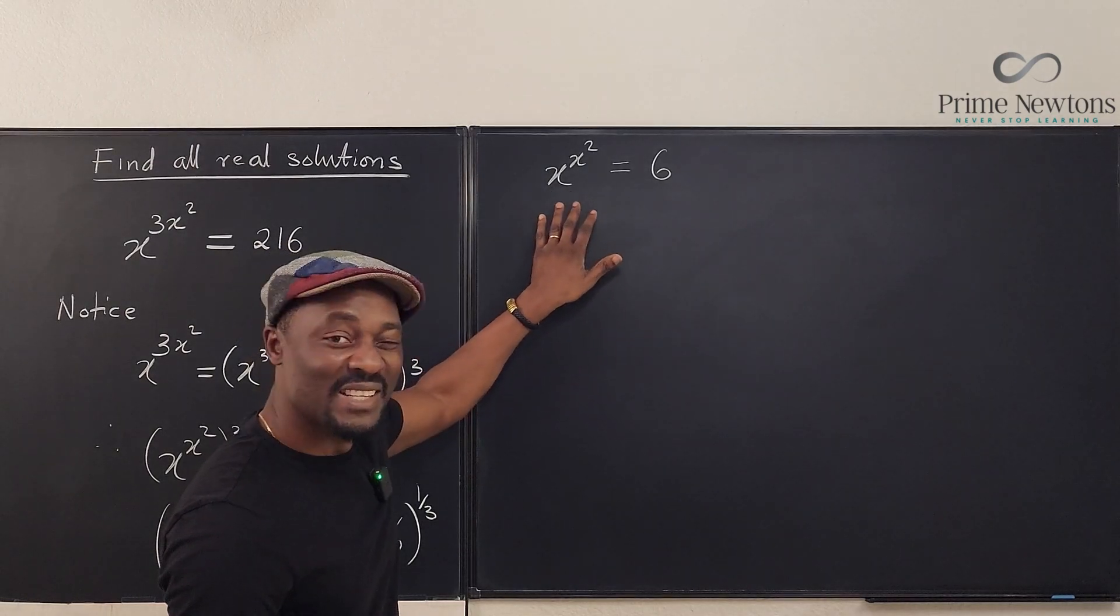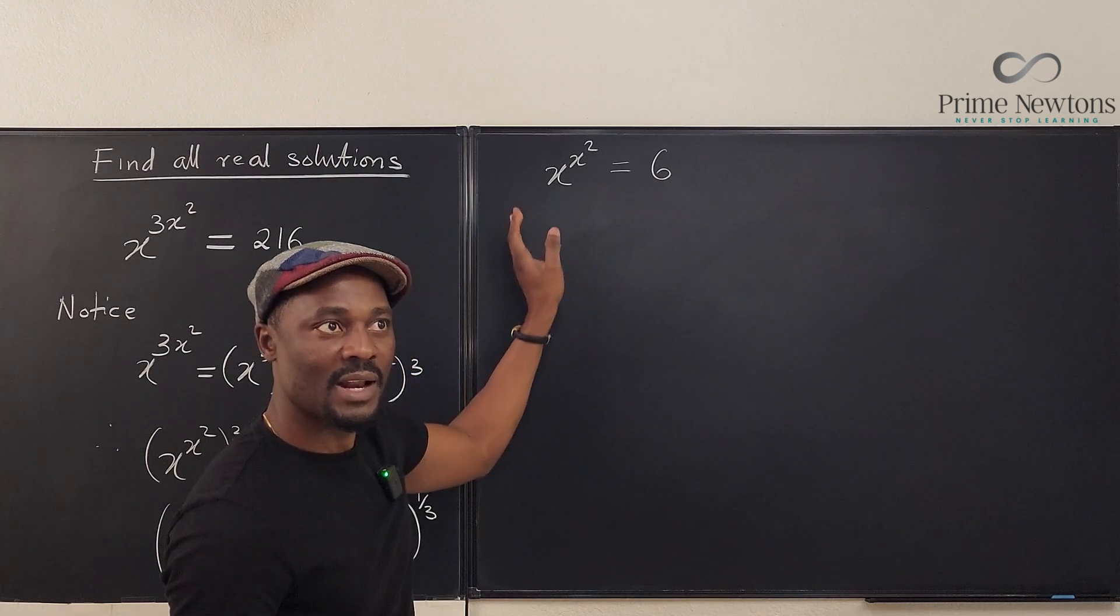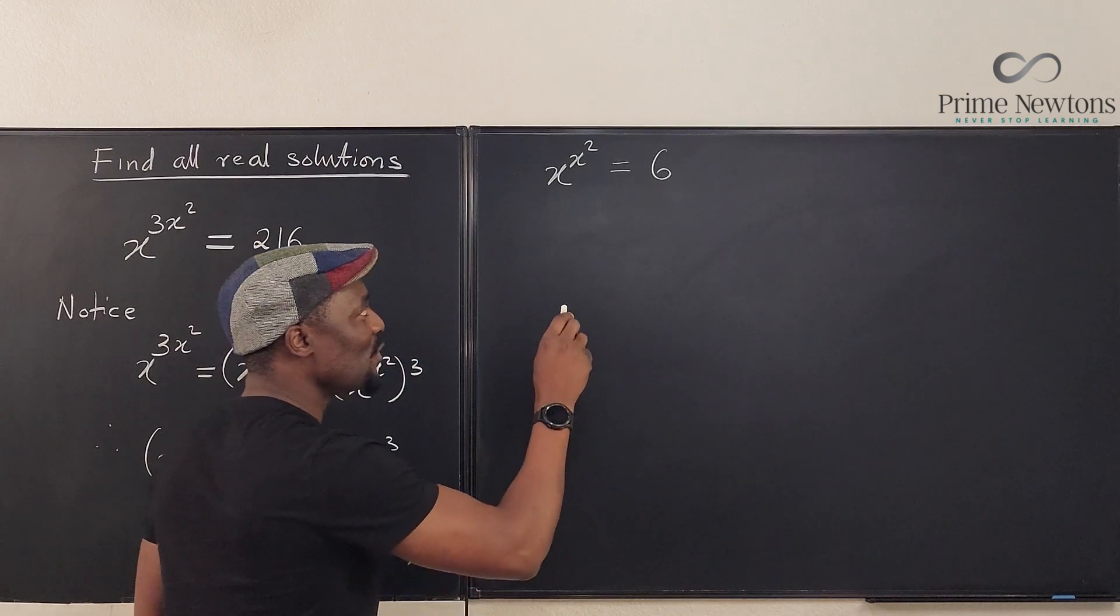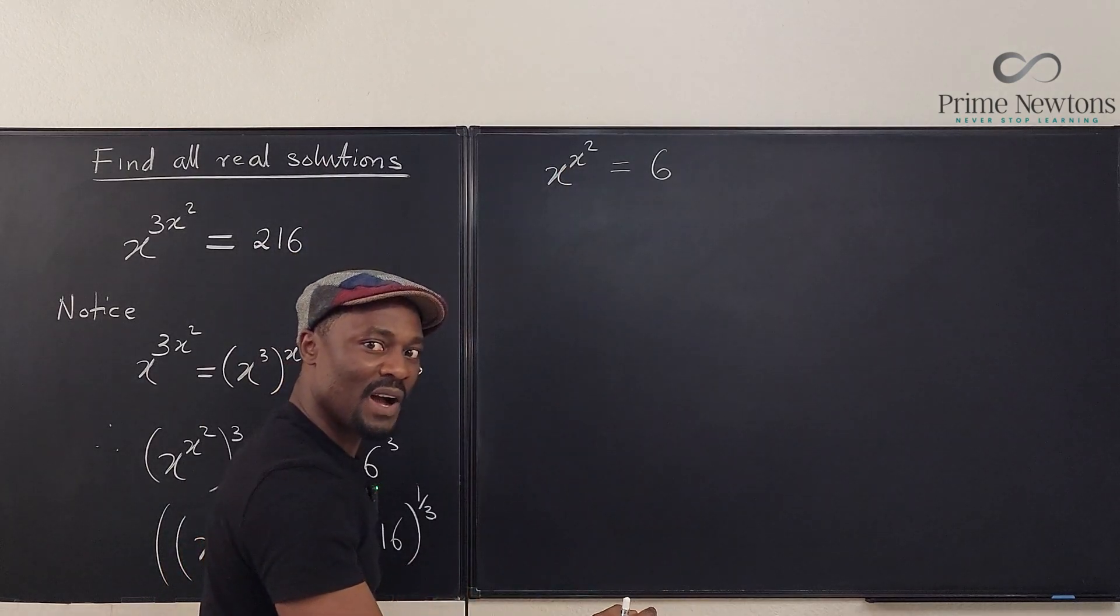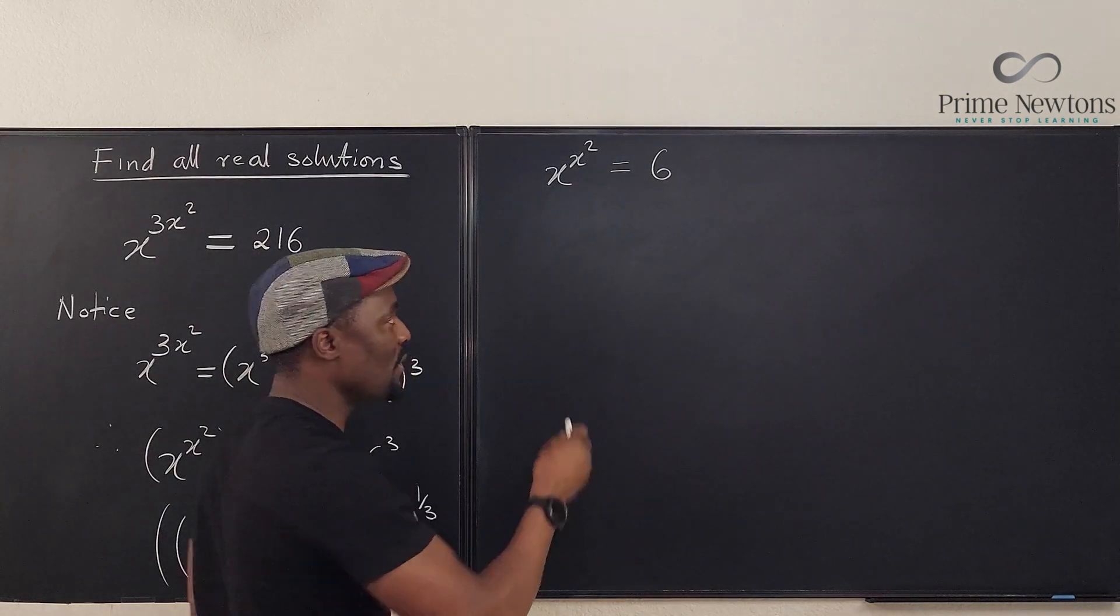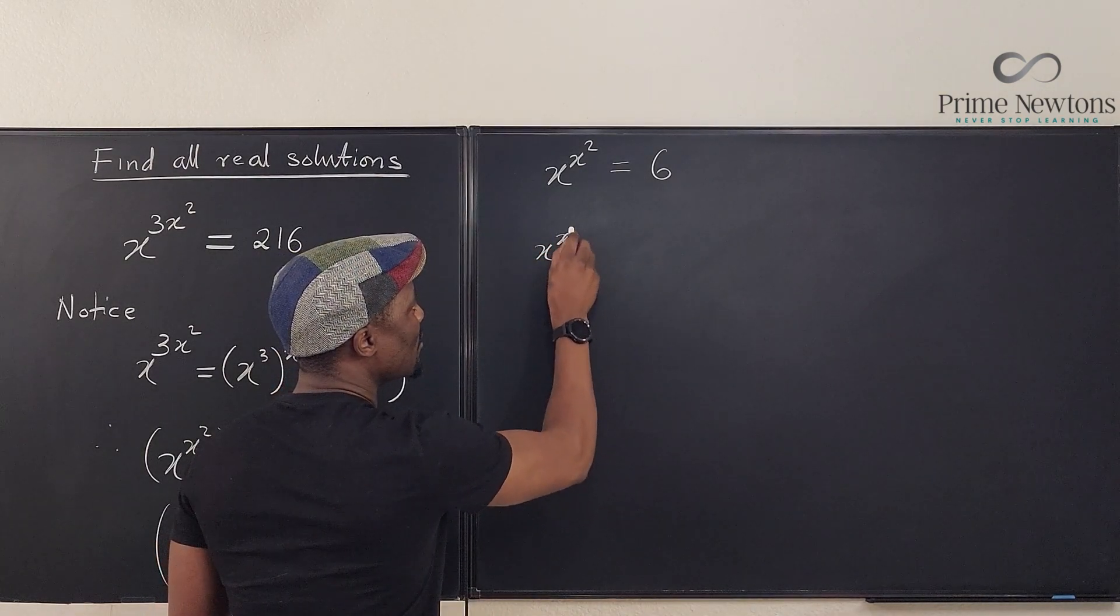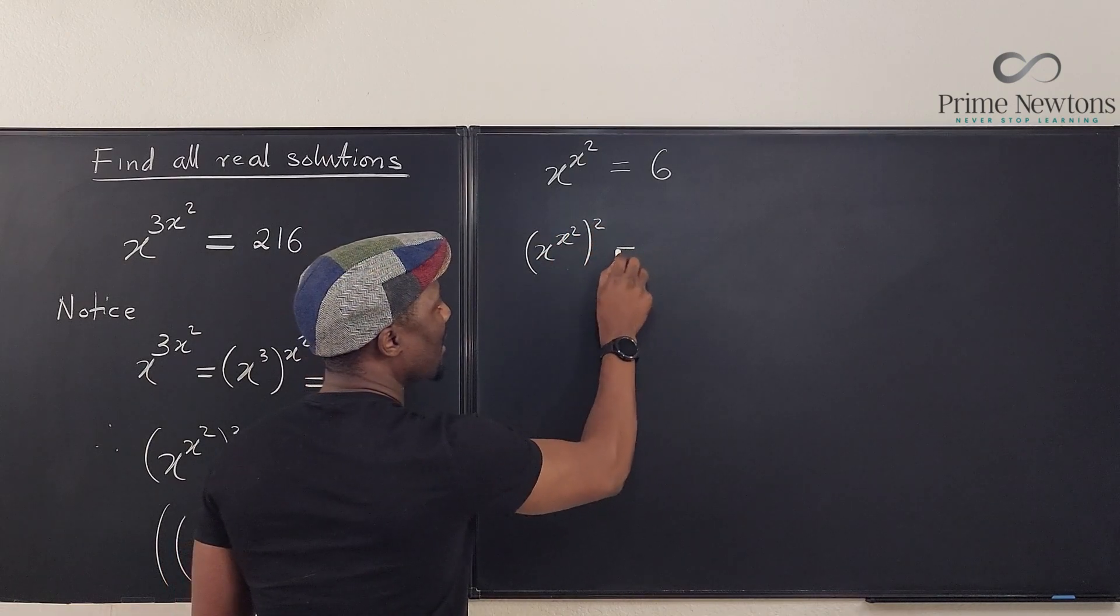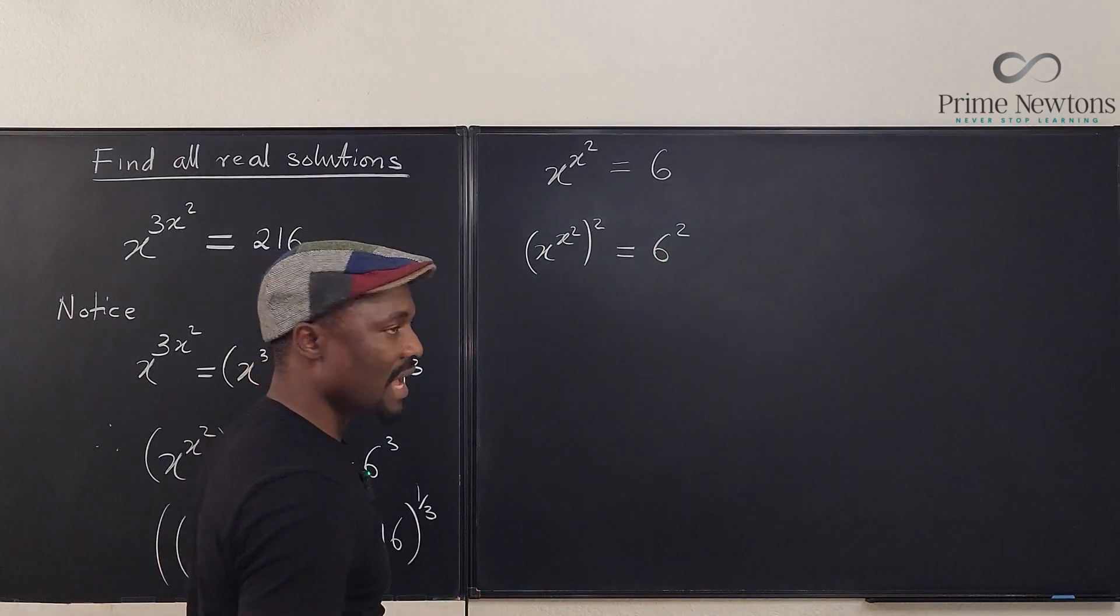There's a strategy you can adopt. You can make this left-hand side look like the right-hand side or make the right-hand side look like the left. What I can do is, if this guy had its own square, then everything will be fine. So what if we raised everything to power 2? What if I say x to the x² squared?